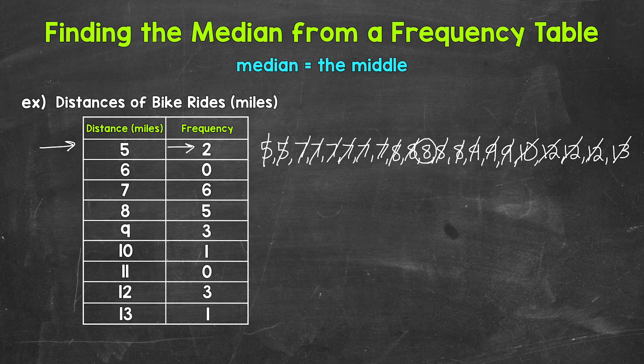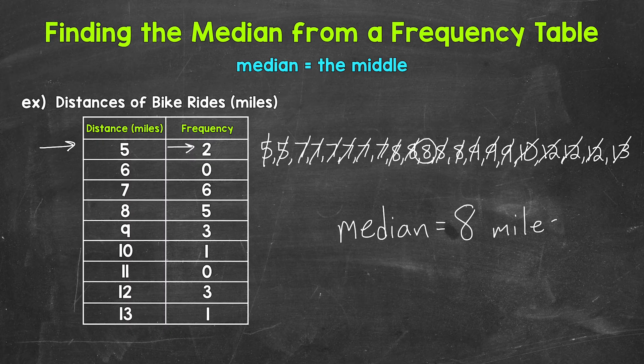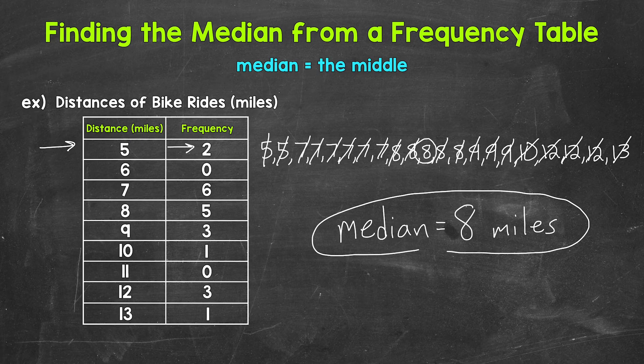So our median is 8. And since we are working with distance and miles, we can label this. So the median, the middle value of those distances is 8 miles.